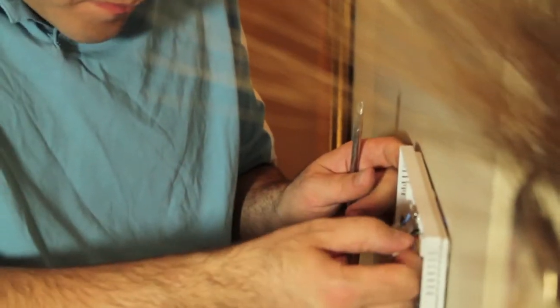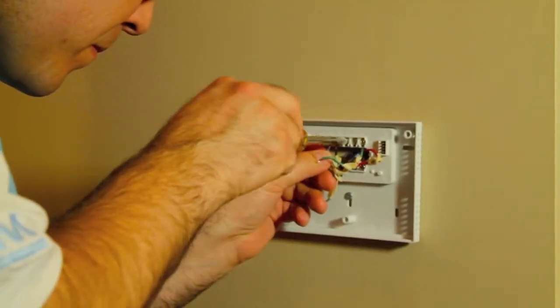Match up the letters you have marked on the wires to the same letters you have on the terminals on the thermostat back cover. Use the screwdriver to fasten them in place.